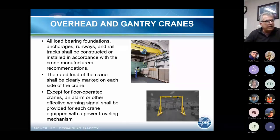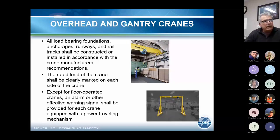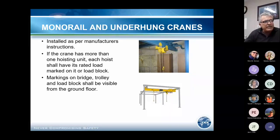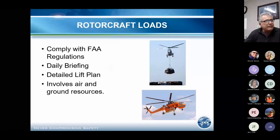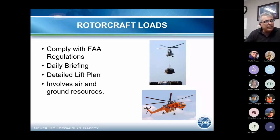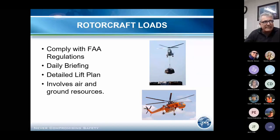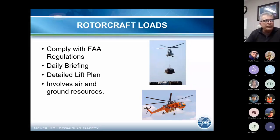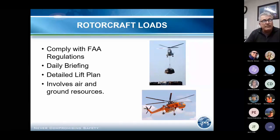Floor-operated cranes require proper signals — the operator on the floor uses a power traveling mechanism to operate the crane from the bottom. Monorail and underhung cranes have a framework underneath the ceiling inside a building. For rotorcraft loads, you have FAA regulations, extended lift plans, approvals, and people on the ground from takeoff to pickup to return, with nothing allowed underneath the travel path. That's when you get local police involved, whether the work is in a plant or outside.